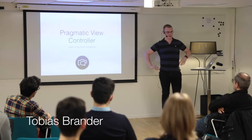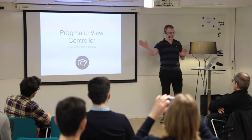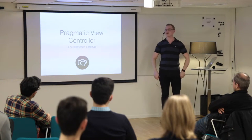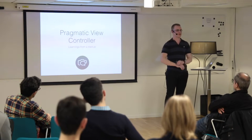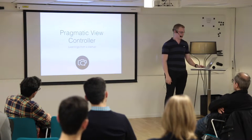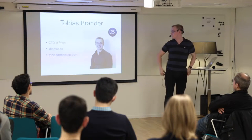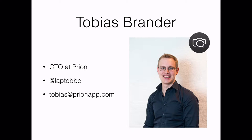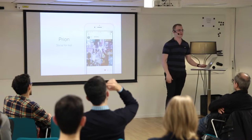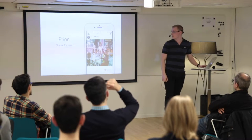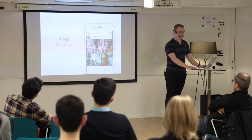I call this talk 'Pragmatic View Controller' — sort of a backlash on all the talk about massive view controllers and minimal view controllers and extracting everything into files with very strict, hard rules. I work at a startup right now, so this is what I've learned, some tips and tricks. I'm the CTO at Prion, which stands for Privacy On — a private photo sharing application, think of it as a private Instagram. The code I was fiddling with in Xcode is actually from Prion and I'll use that to exemplify during the talk.